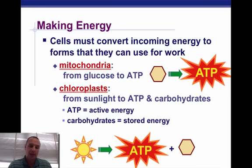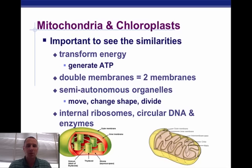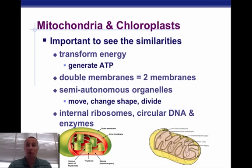Starch in plants and glycogen in animals. When we look at the mitochondria and the chloroplast, there are some similarities about them that we need to know. They both transform energy in the form of ATP. They both are double membrane structures, which means they have two membranes. They are semi-autonomous, which means these two organelles — the mitochondria and the chloroplasts — could actually live independently of one another. They have their own DNA. They divide. They change shape. They have their own internal ribosomes and their own enzymes, which is going to lead to a theory that you're going to see at the end.